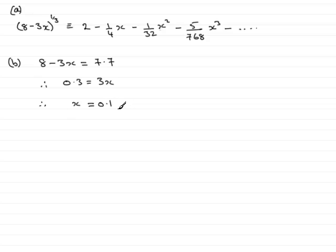So that's the appropriate value for x that I need now to substitute in so that I get the cube root of 7.7. So by saying when x equals 0.1, this value here becomes the cube root of 7.7. So we'll write that as the cube root of 7.7.